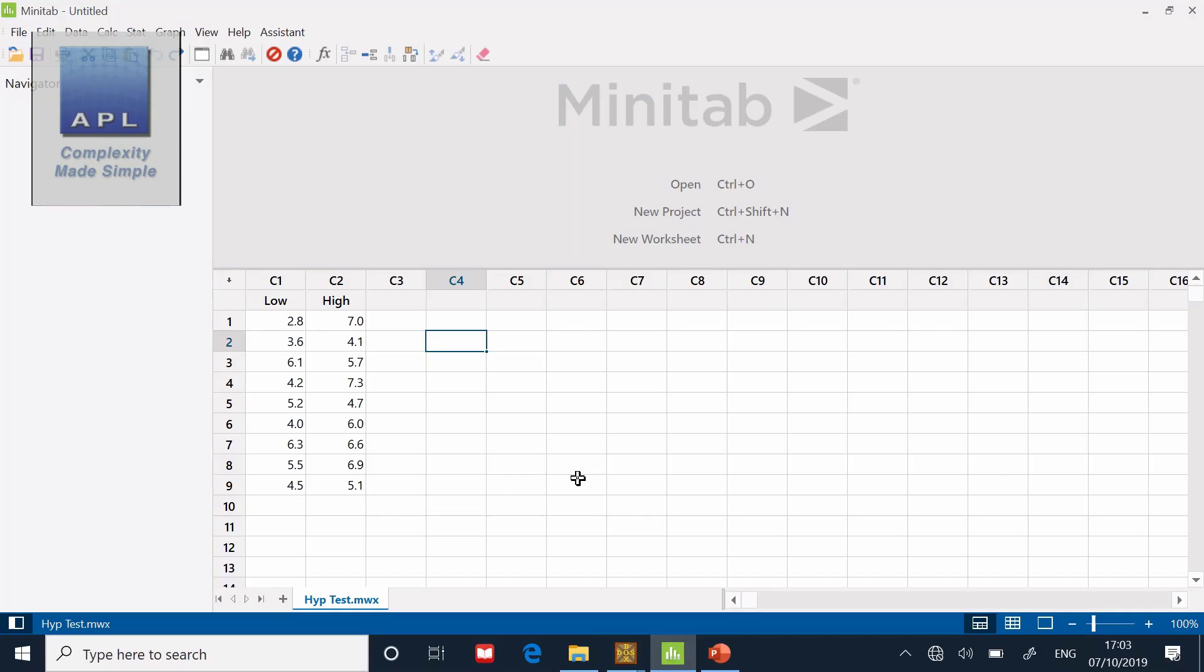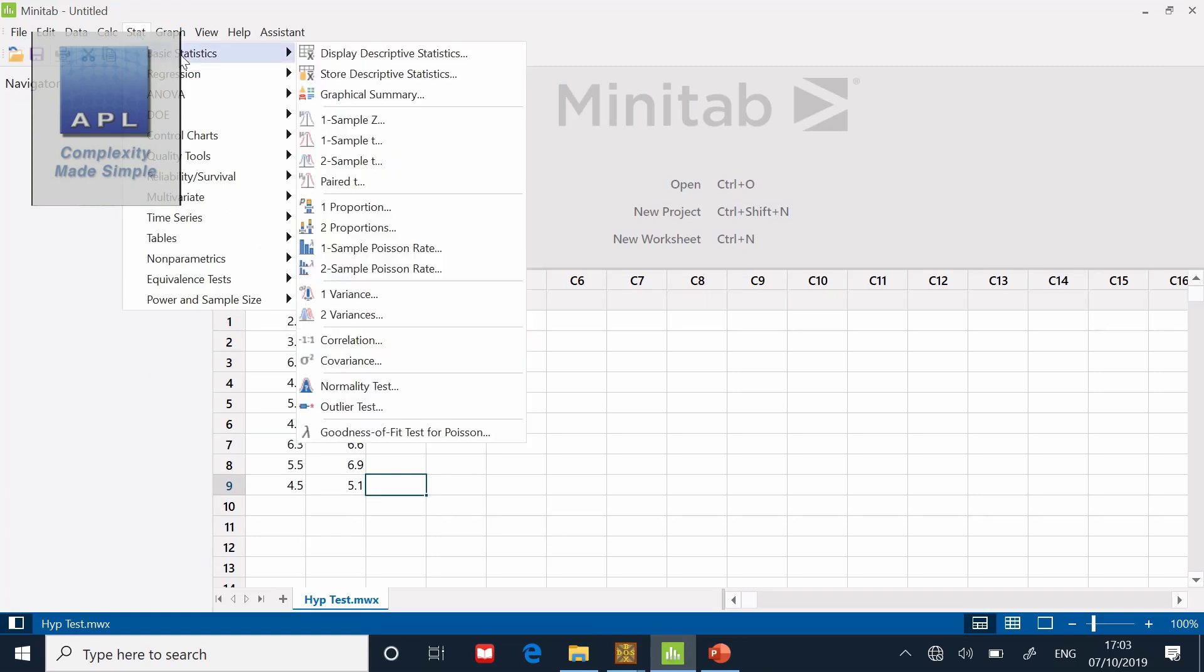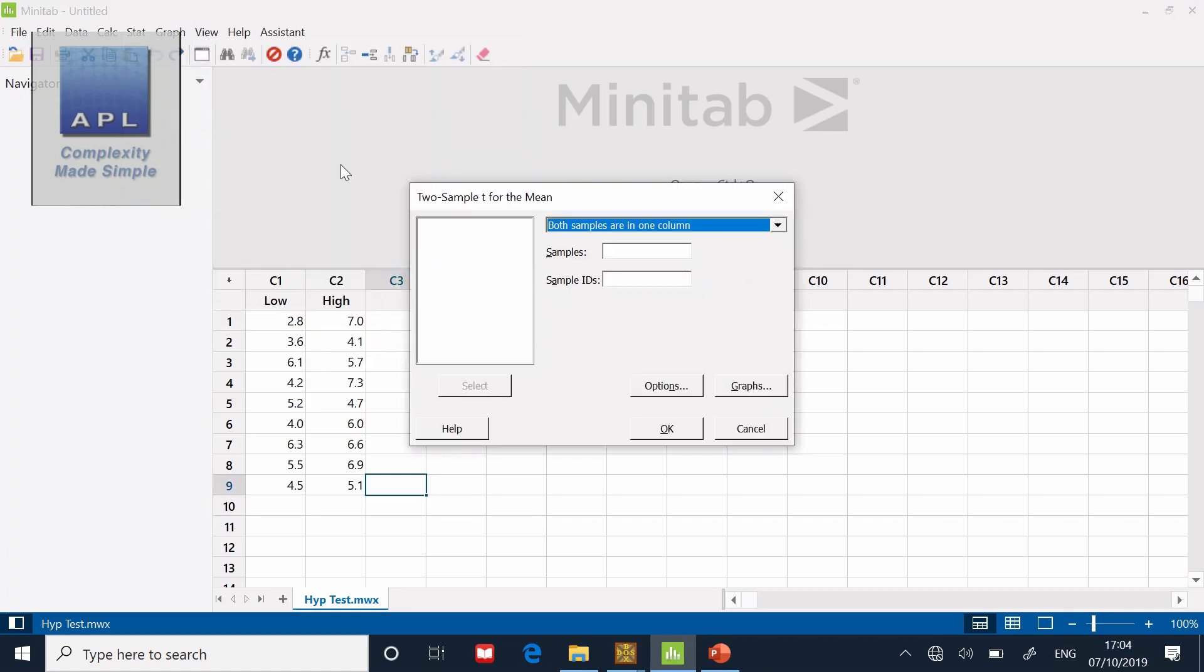So here is the data. Here's the data from the low temperature, here is the data from the high temperature. So both our data sets are in separate columns. Then very simply, up to Stat, Basic Statistics, and in the Basic Statistics menu we have the two-sample t. There it is, the two-sample t. Determine whether the mean differs significantly between the two samples. Click OK to that.